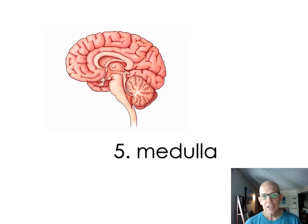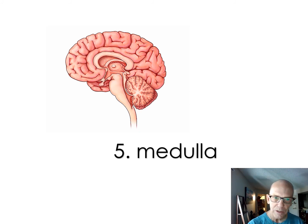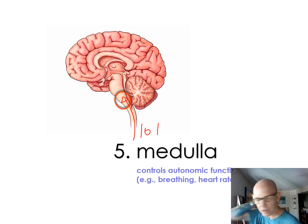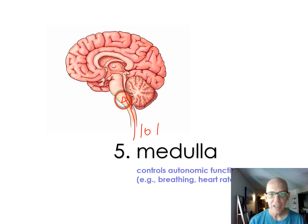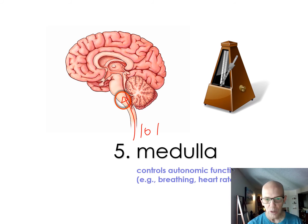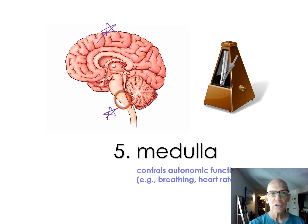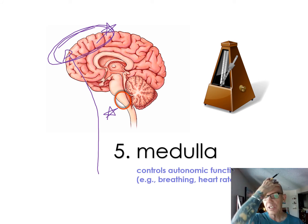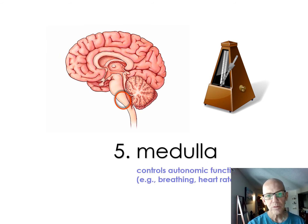Part five is the medulla, right down at the very bottom, almost the beginning of the spinal cord highway. It's at the lowest level and is the most primitive — almost every animal has it. I call it the metronome because it controls all the autonomic, automatic stuff. As you move up the brain, you get more conscious control in more sophisticated structures like the frontal lobe.